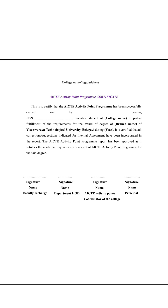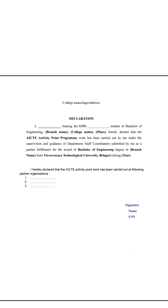Previously there was no certain format to prepare it, but now they have provided one. The certificate photocopy is the certificate you receive from a particular site — an NGO or government organization where you carried out an AICTE activity. There are a total of five activities you need to carry out for 100 marks; for diploma it is four activities. After that, a declaration must be provided along with details of the partner organizations where you carried out the activity.